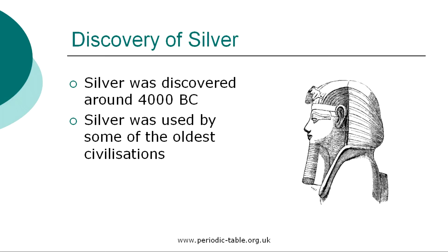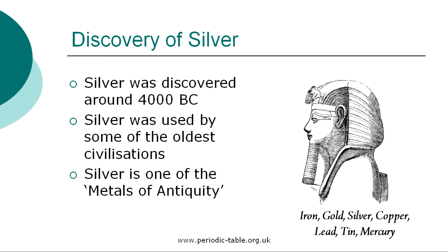Right up to the medieval period of the Middle Ages, people believed that only seven metals existed. These seven metals were iron, gold, silver, copper, lead, tin, and mercury, and are now referred to as the metals of antiquity.